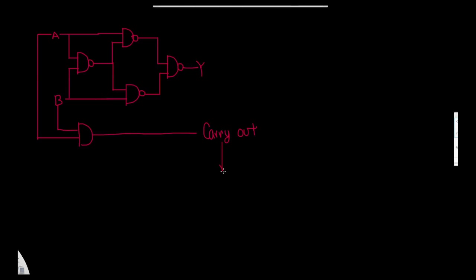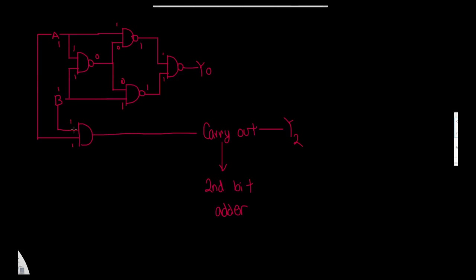Normally carry-out would go into your second bit adder, but since we don't have one yet, it goes to a second LED. When both inputs are 1: the XOR output is 0 and the AND carry-out is 1, giving us binary 10, which equals 2. This is a 1-bit adder.